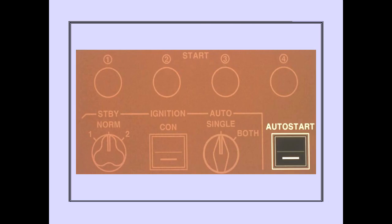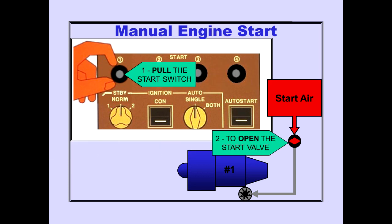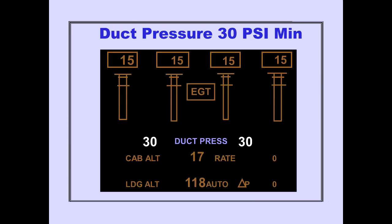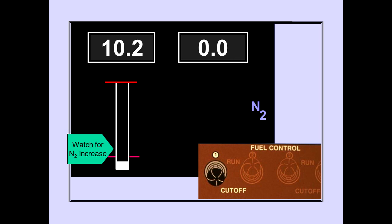For a manual engine start, the auto start switch is off. Pulling the start switch out opens the start valve, allowing start air to drive the starter. At least 30 PSI bleed air duct pressure is required for starting. Increasing N2 RPM indicates the N2 rotor is turning. When N2 RPM increases past the fuel on command indicator, positioning the fuel control switch to run opens the spar and engine fuel valves and energizes the selected igniter.